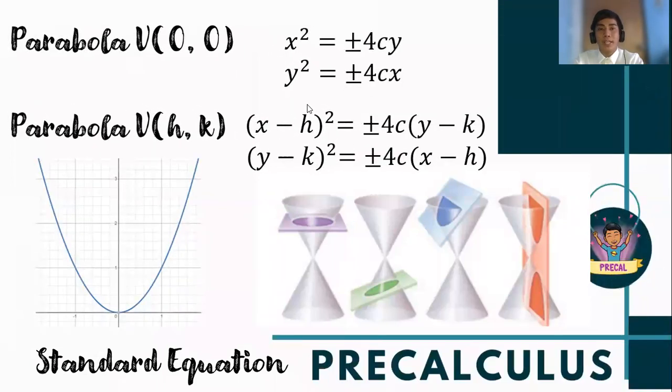For the parabola with vertex at (0,0), we have x² = ±4cy. These are parabolas which open upward or downward. While parabolas which open to the left and right have a standard equation y² = ±4cx. For parabolas with vertex at (h,k), it now has x-h and y-k parts respectively. The opening of the parabola also follows depending on the quadratic parts of the standard equation.